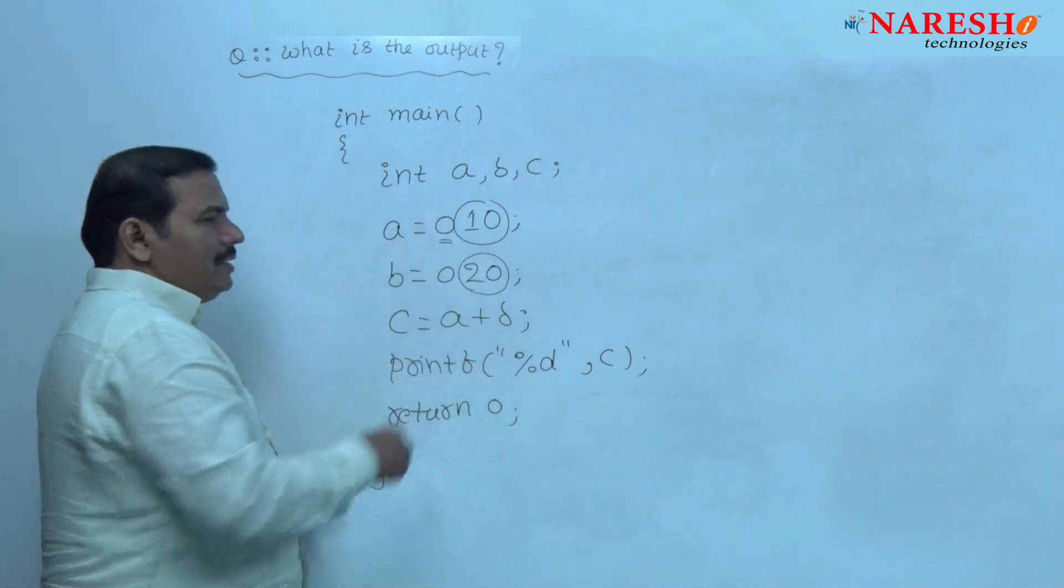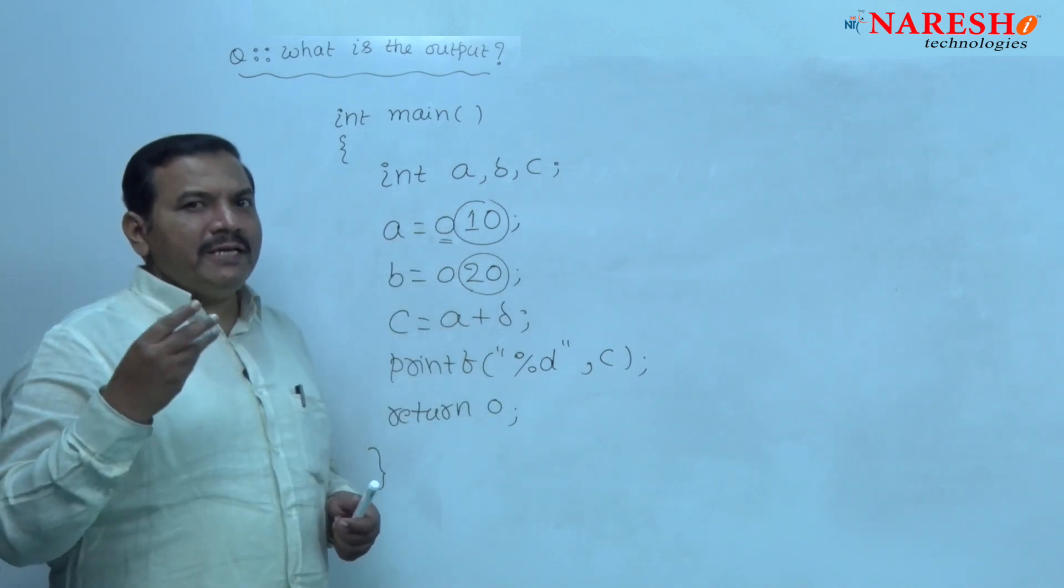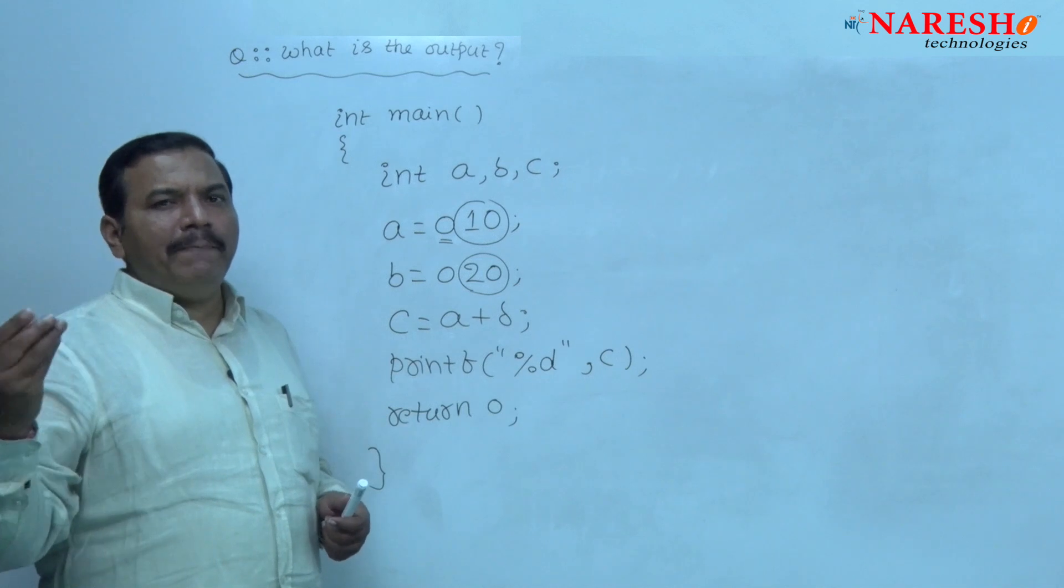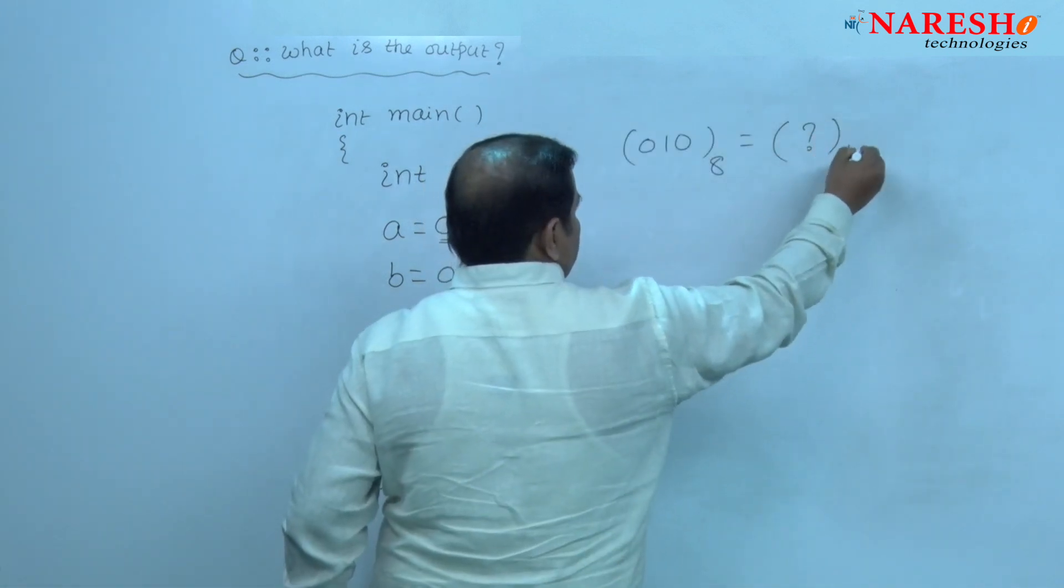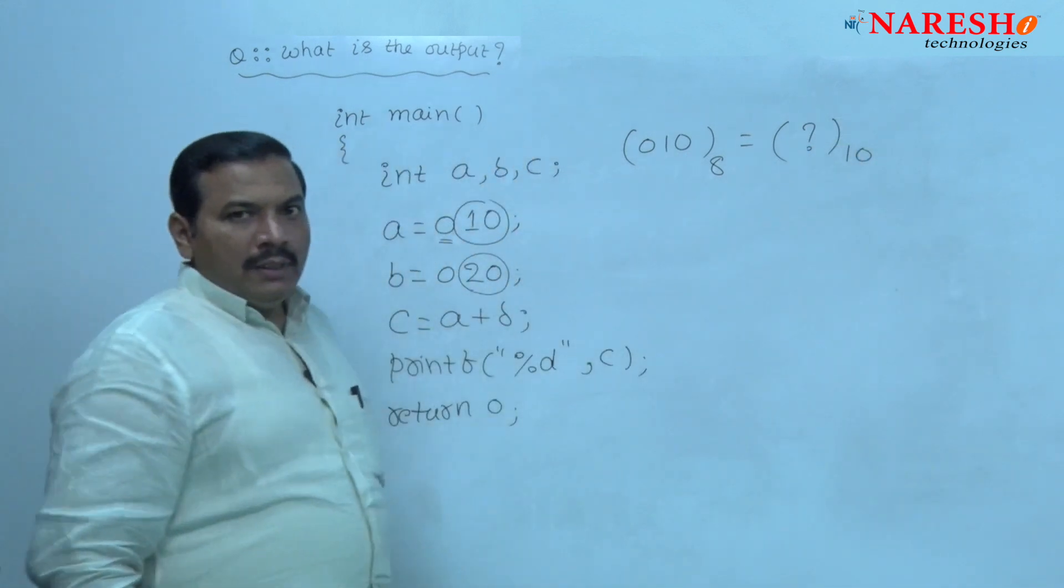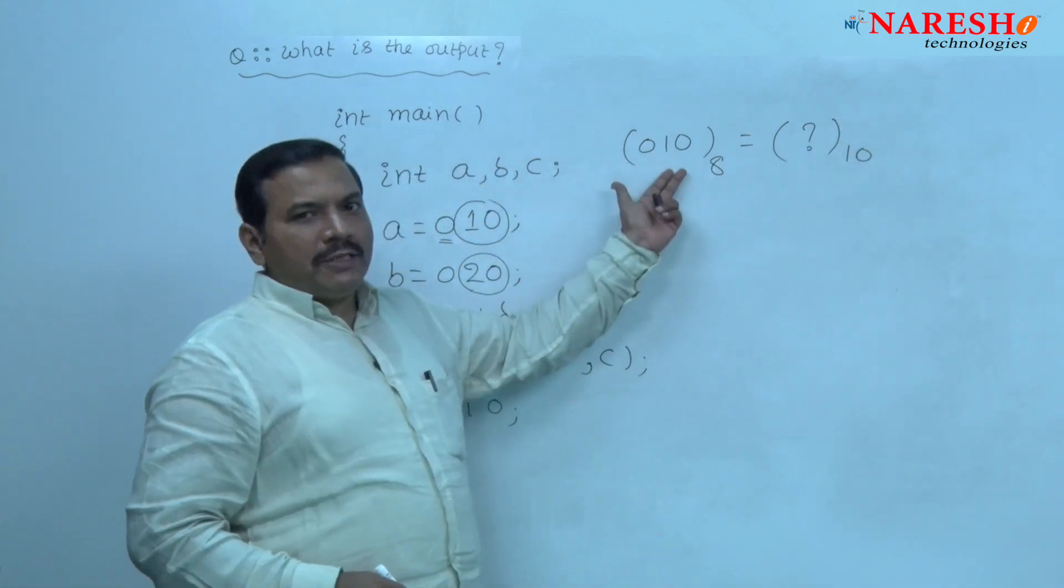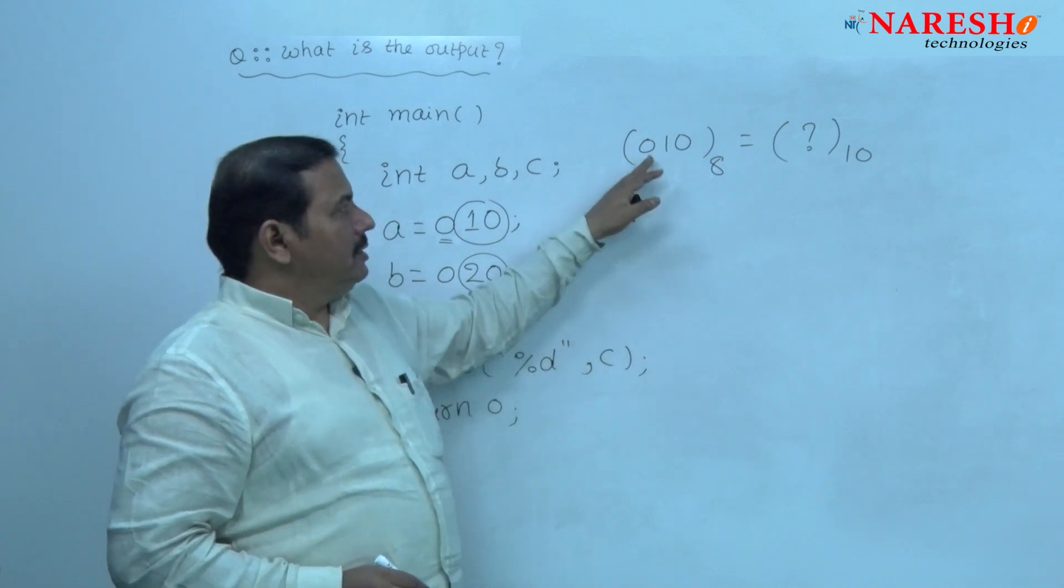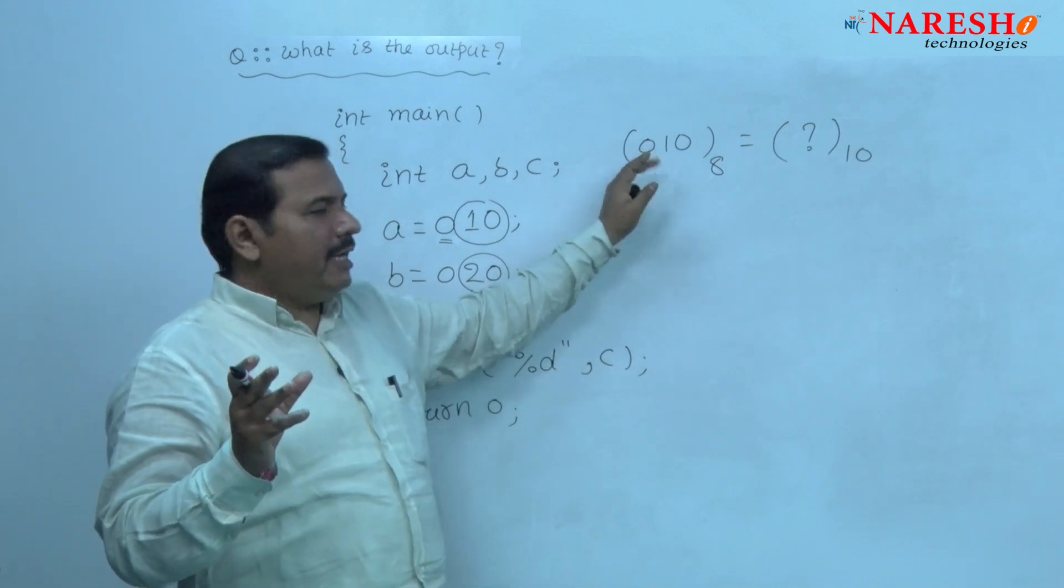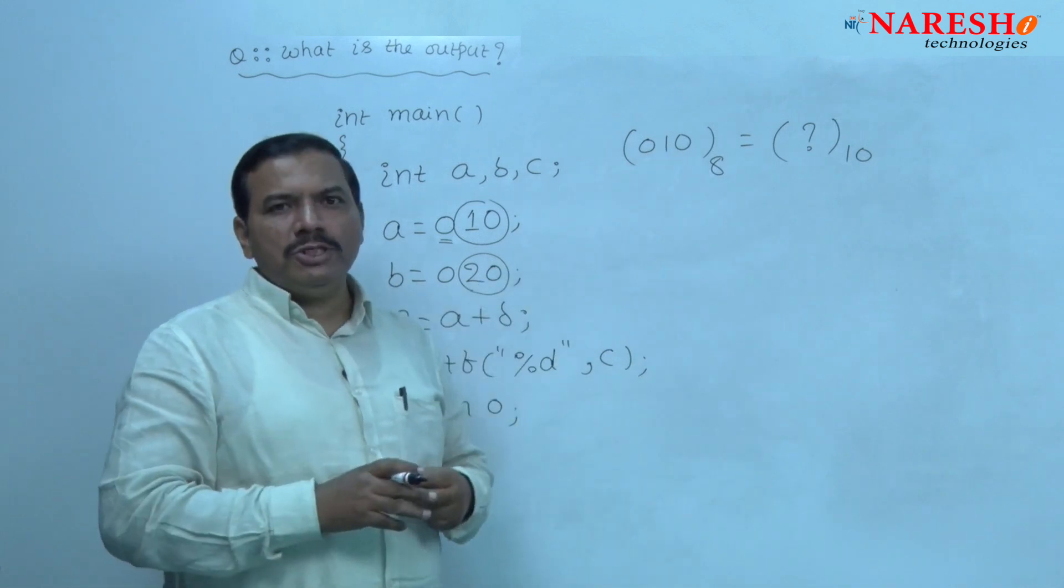How to convert an octal integer, a base 8 number into a base 10 number? This is an octal integer. Given octal integer, 0 is just a sign. The actual data is 1, 0.